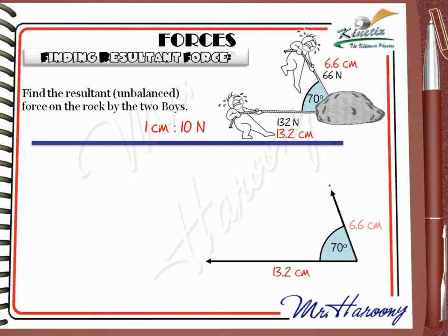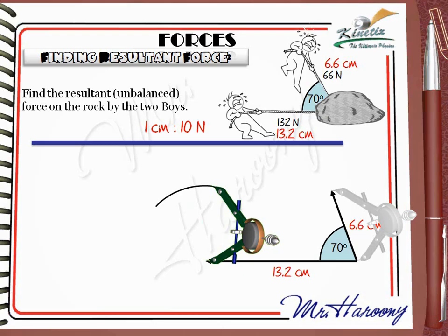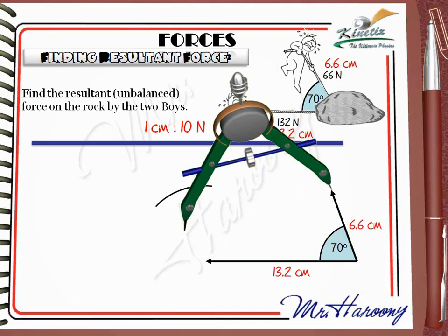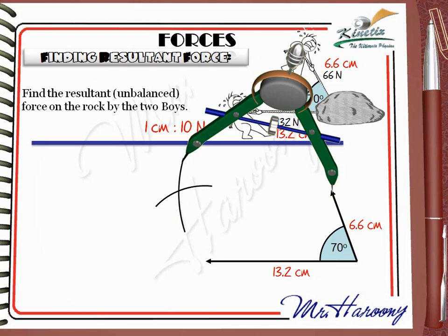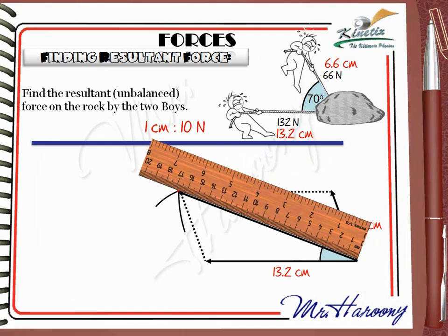Now the compass comes. Open the compass to fit the 6.6 cm arrow, move the compass to the other end of the 13.2 cm line, and draw a small arc. Then open the compass to fit the 13.2 cm line and draw another arc. The two arcs intersect at the point that closes the parallelogram. Draw the diagonal and measure its length — the ruler shows 16.7 cm, which means the resultant force is 167 N.